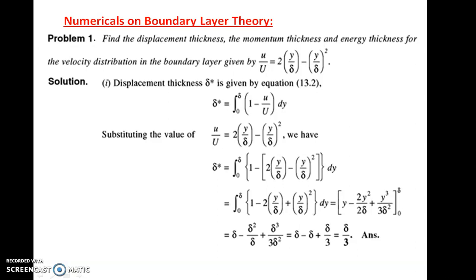Let us take the numerical on boundary layer theory. Find the displacement thickness, momentum thickness and energy thickness for the velocity distribution in the boundary layer given by u/U = 2(y/δ) - (y/δ)².